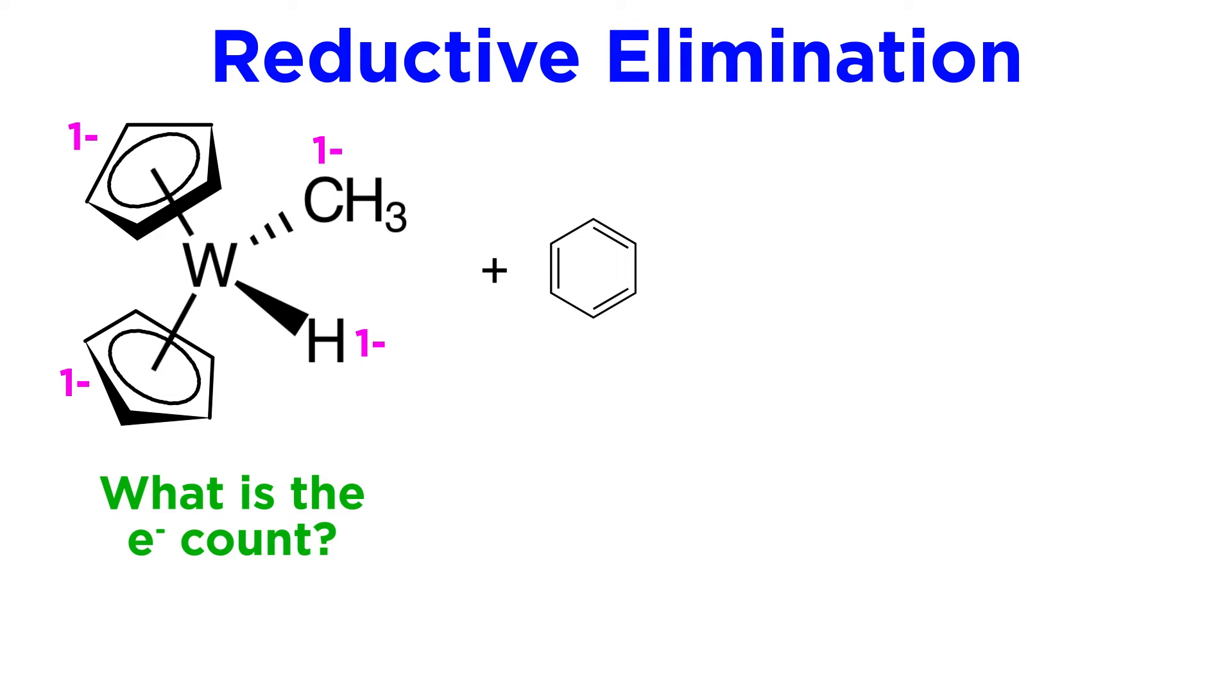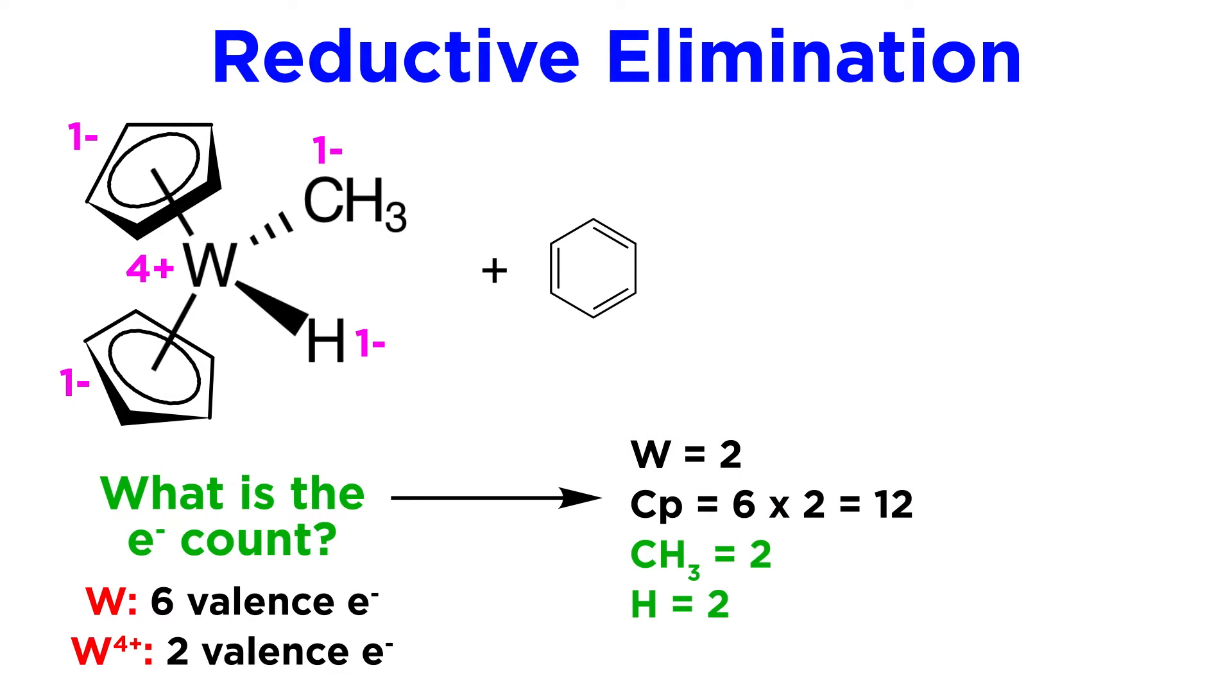Well each of the four ligands has a 1- charge, and the complex is neutral, so tungsten is 4+, meaning it has only two valence electrons. Plus 12 from the cyclic ligands, and another 4 from the other two, that brings us to 18. This means the complex is coordinatively saturated, and also quite crowded sterically. Benzene will not be able to coordinate.